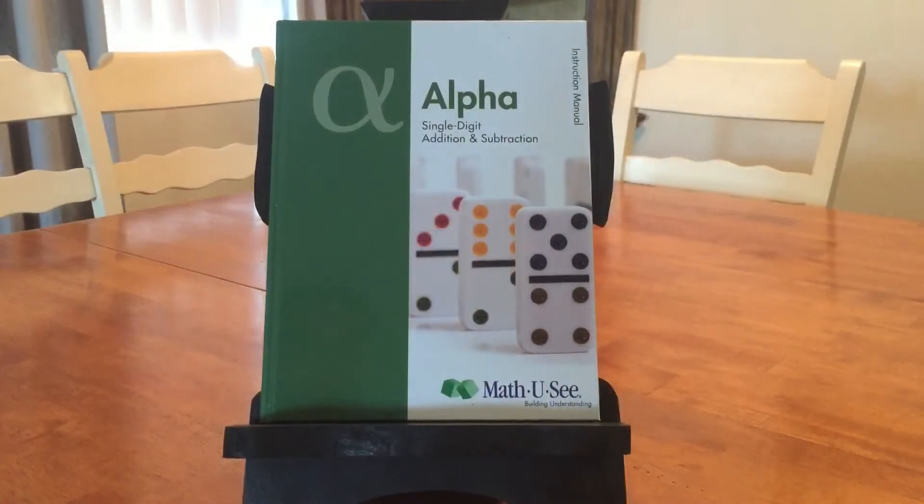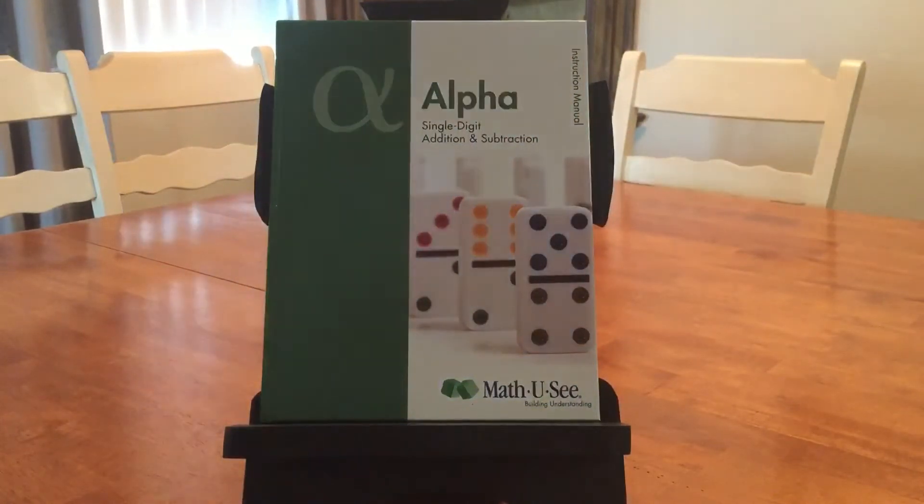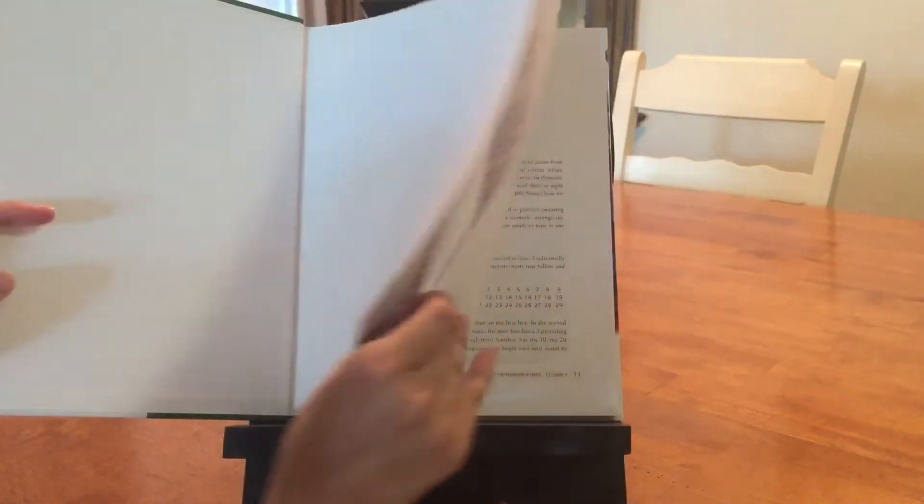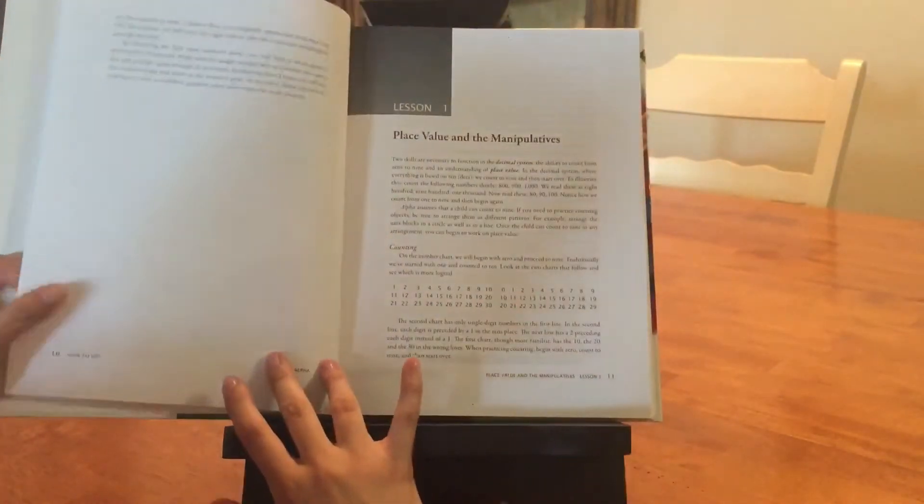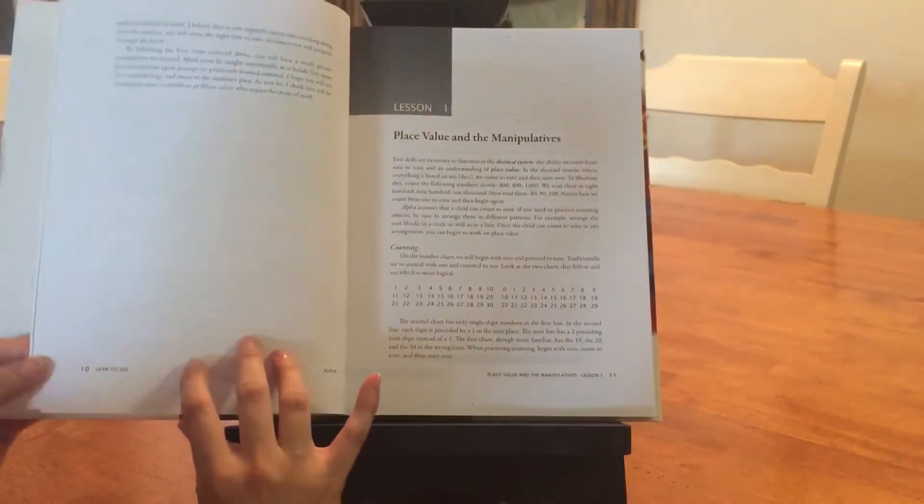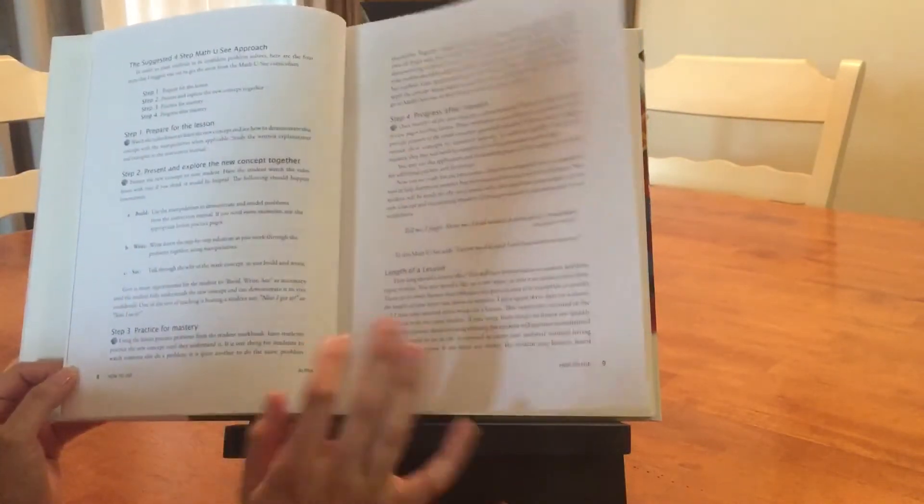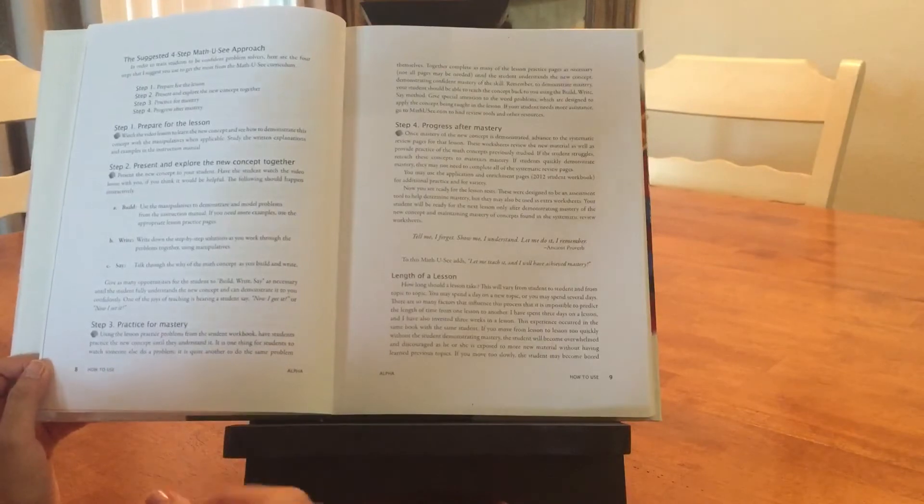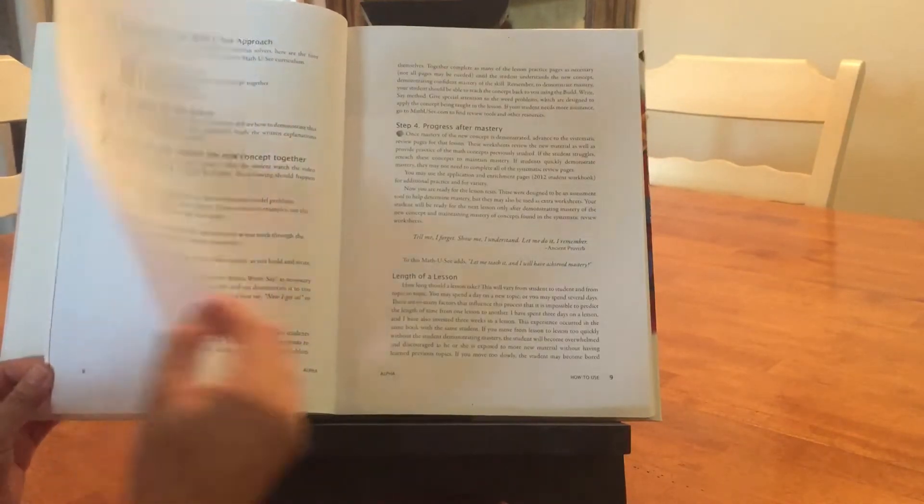The Alpha book teaches the kids about single digit addition and subtraction. This is a mastery-based program. Basically, what that means is the kids don't move on to learning something new until they have actually mastered what they're currently working on.